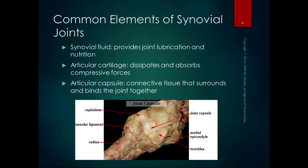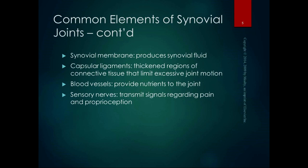The articular cartilage dissipates and absorbs compressive forces — that's its job. The articular or joint capsule is the connective tissue that surrounds and binds the joint together, holding the synovial fluid in as well. The synovial membrane is on the inside of the articular capsule and produces that synovial fluid. Capsular ligaments are thickened regions of connective tissue that limit excessive joint motion, and we'll talk about the individual ligaments for each joint and exactly which motions they limit.